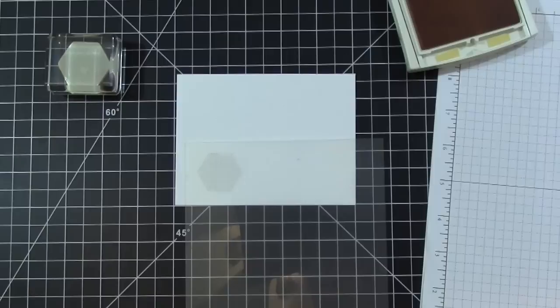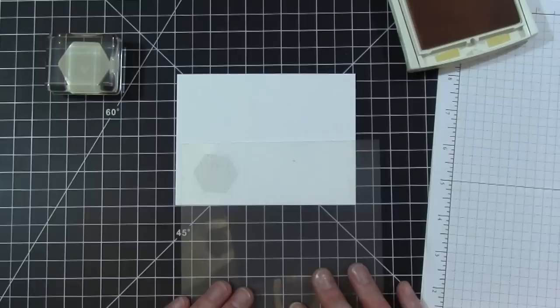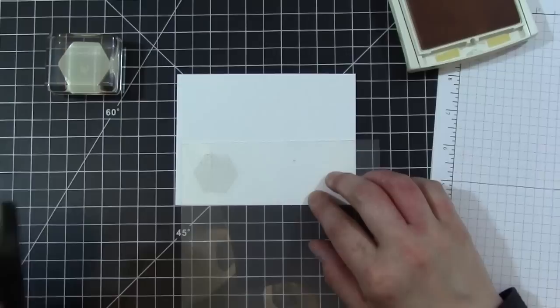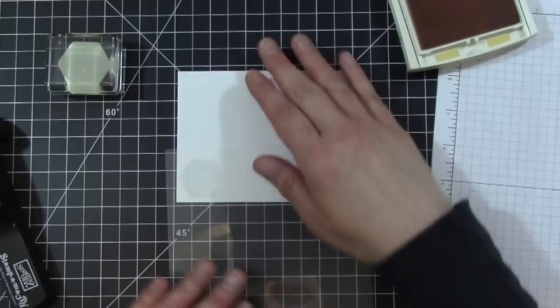I went ahead and stamped one of my images onto my Stampin' Majig and I have a piece of Whisper White cardstock that's cut to 3 ¾ by 5. I have it lined up here on my grid mat and we're going to go ahead and stamp our first image here.